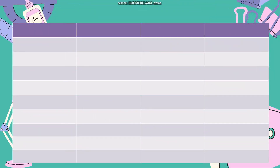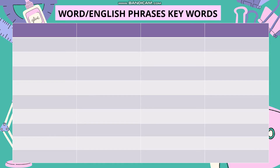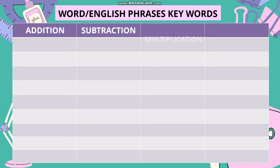To translate word phrases into algebraic expressions, familiarity with words and phrases associated with symbols or operations is important. So here are the keywords used to explain mathematical operations — word or English phrases keywords for addition, subtraction, multiplication, and division.